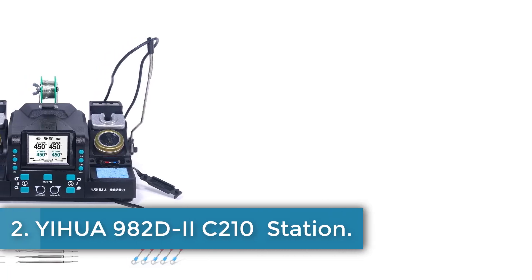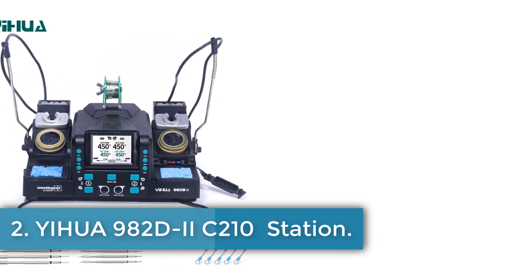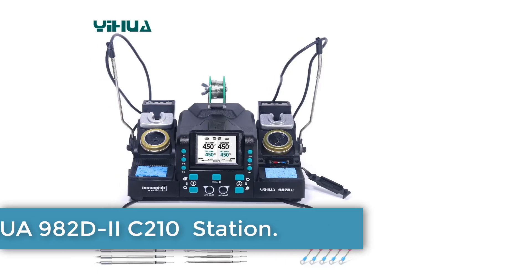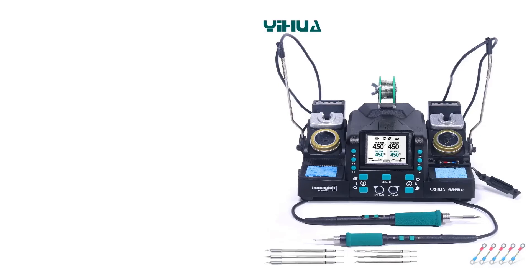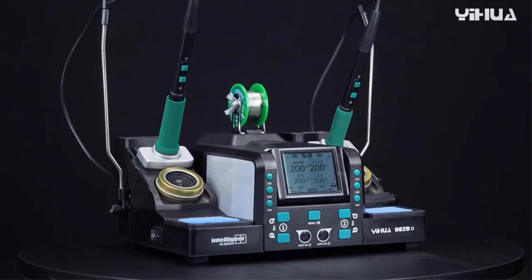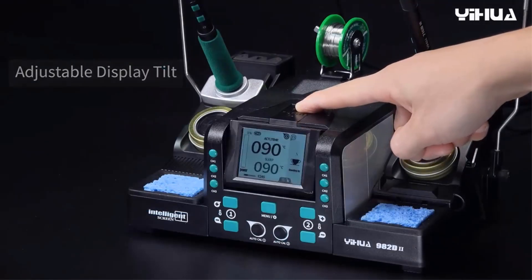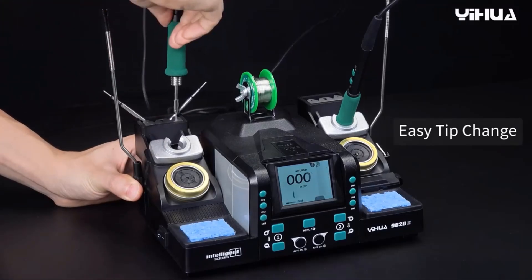Number 2: IHUA 982D-2 Soldering Station. The IHUA 982D-2 is a state-of-the-art soldering station designed for precision soldering and desoldering, particularly suited for small micro-components and smaller circuit boards like those found in smartphones, laptops, and drones.